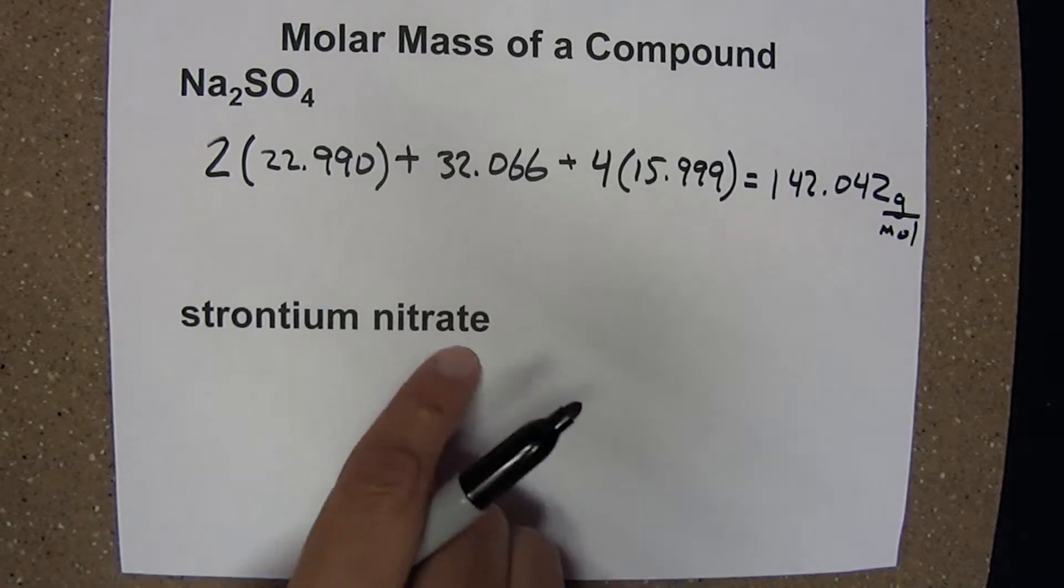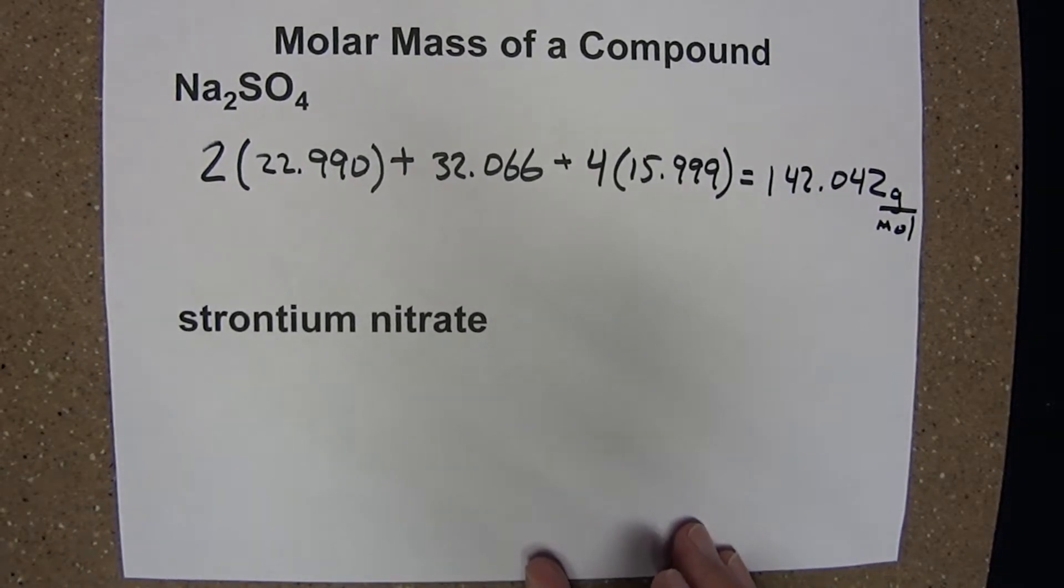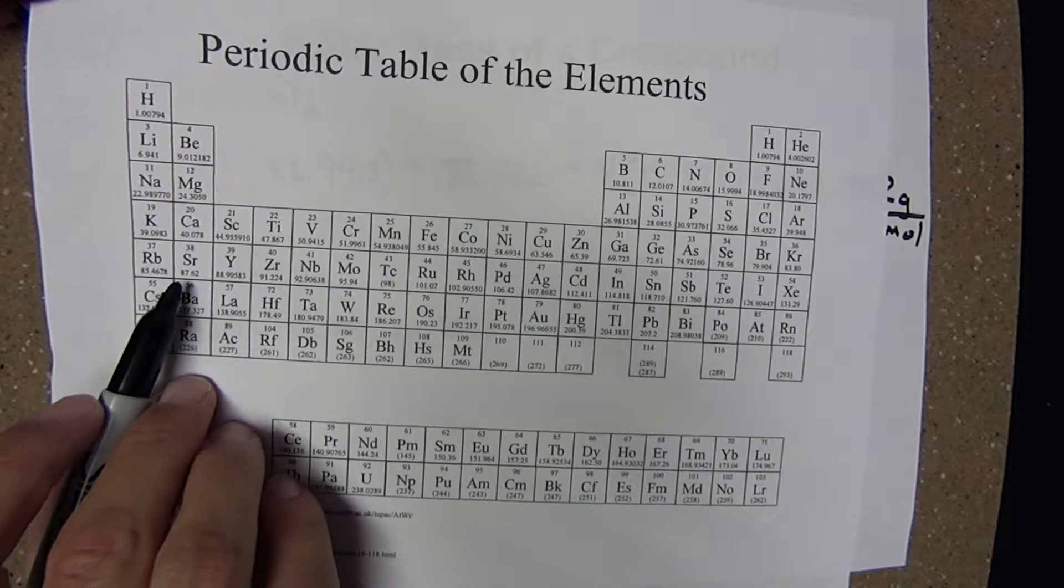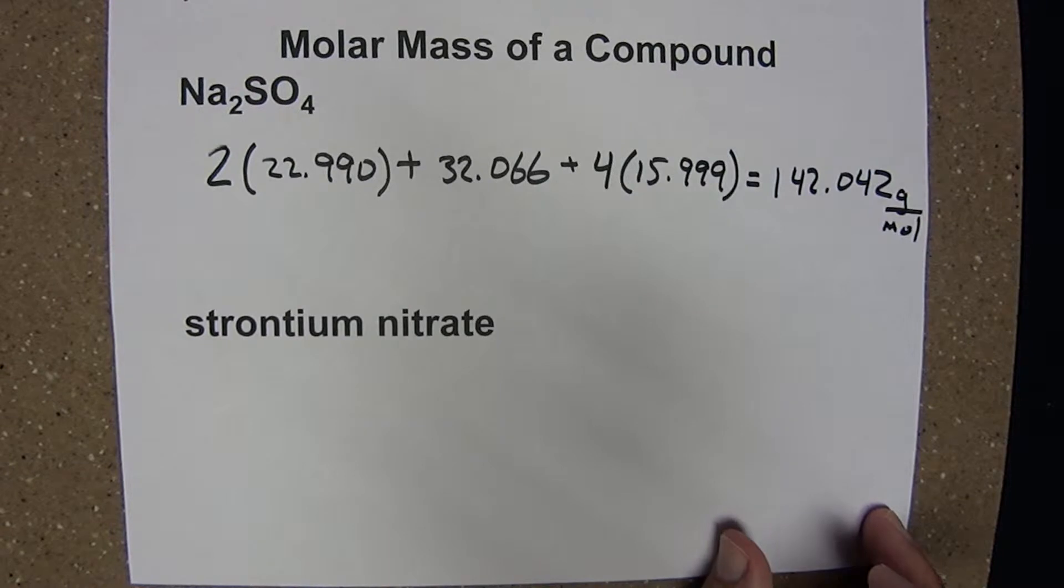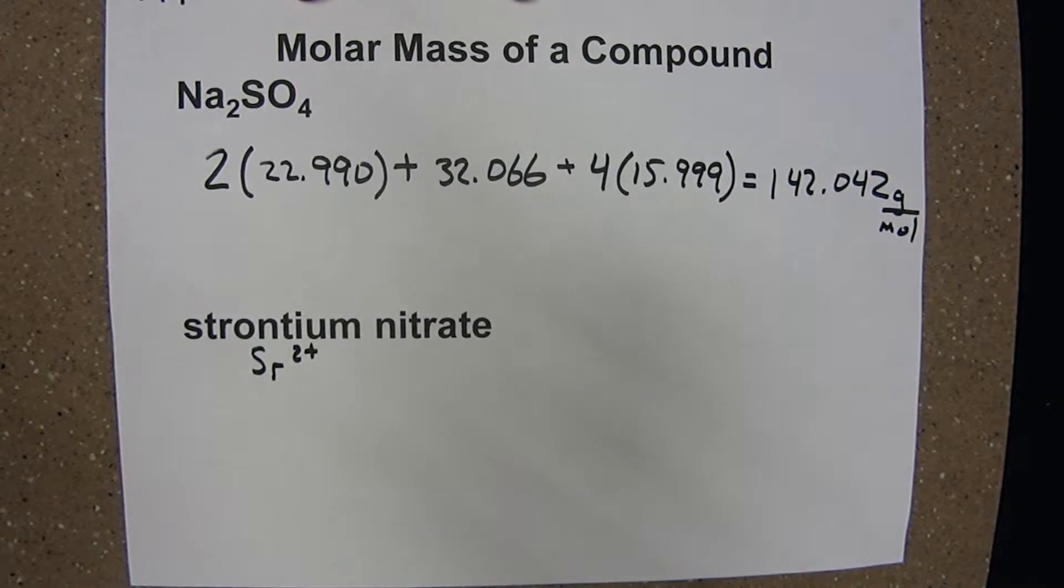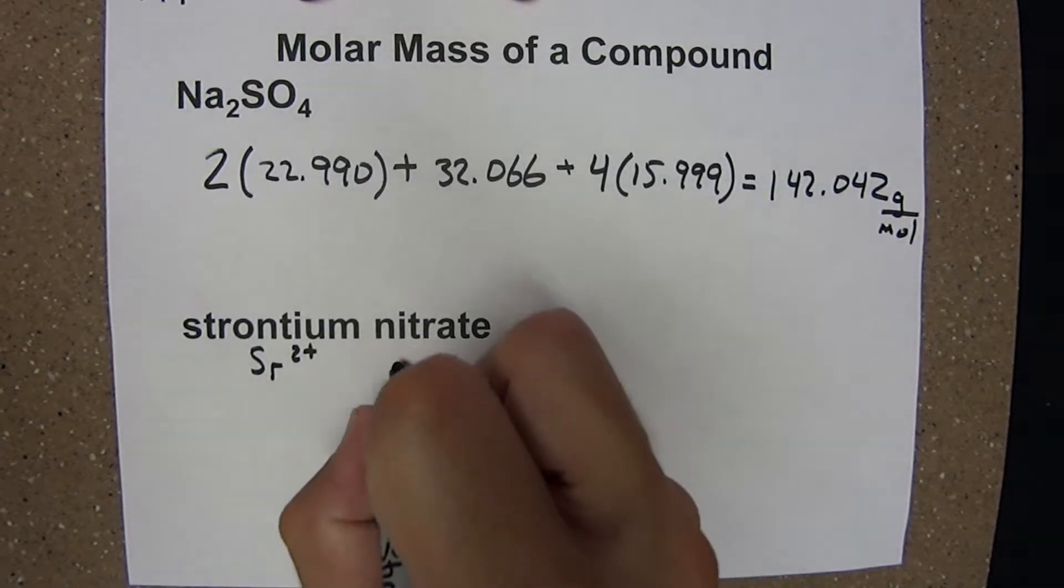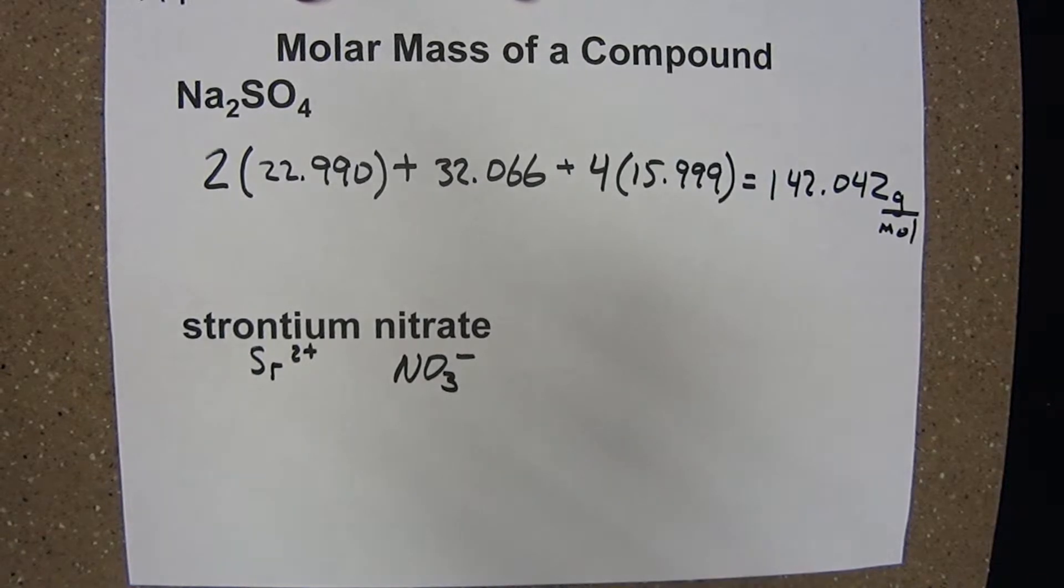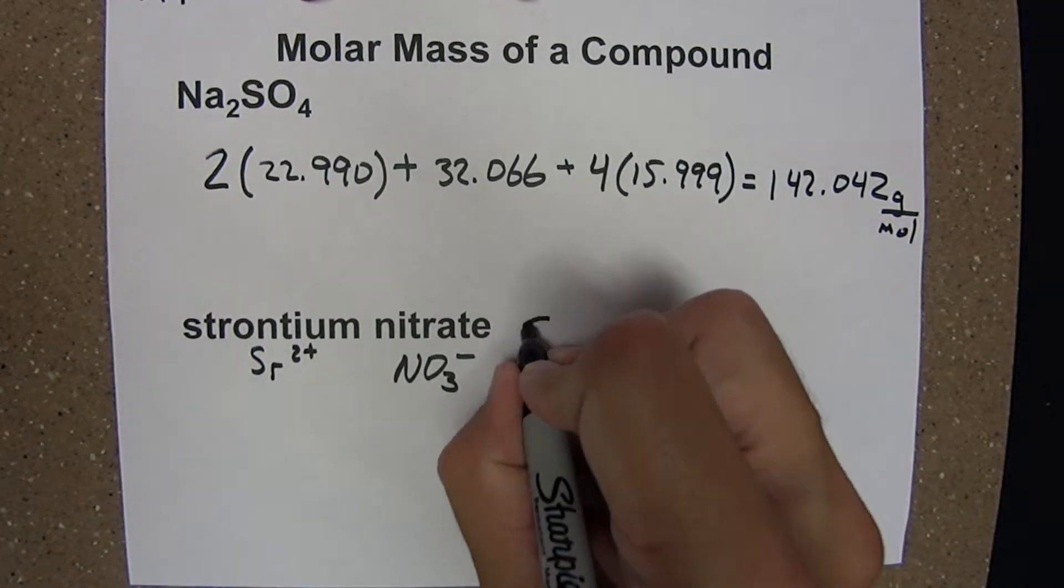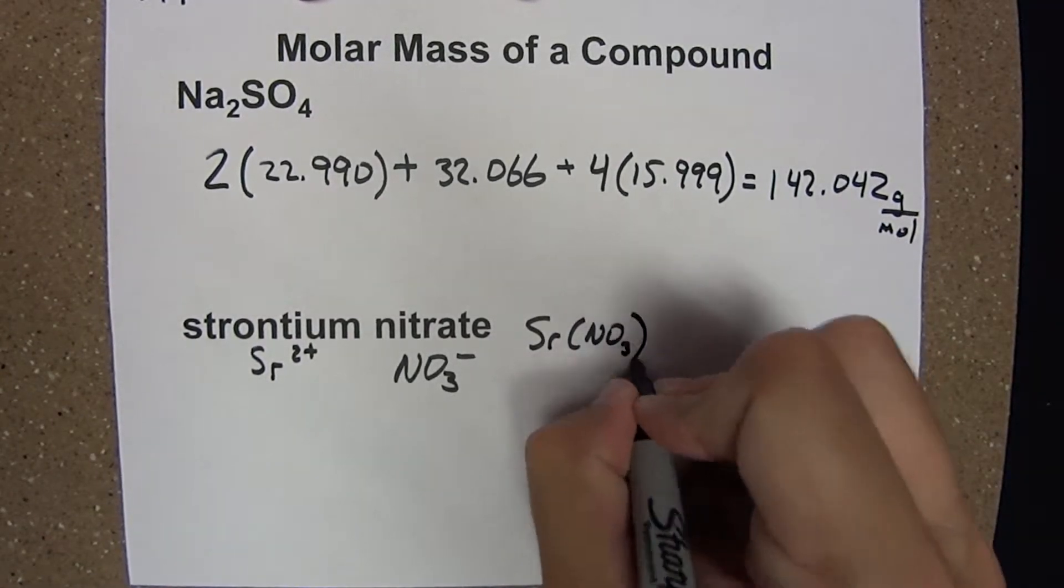Let's try another one here, strontium nitrate. So, here we'll first have to come up with the chemical formula for strontium nitrate. Okay, strontium on the periodic table is an alkaline earth group 2A metal. In an ionic compound like this, strontium will have a plus 2 charge. Nitrate is one of the polyatomic anions. It is NO₃⁻. So, to make the net neutral compound here, I have twice as many nitrate as I have strontium. The chemical formula is Sr(NO₃)₂.